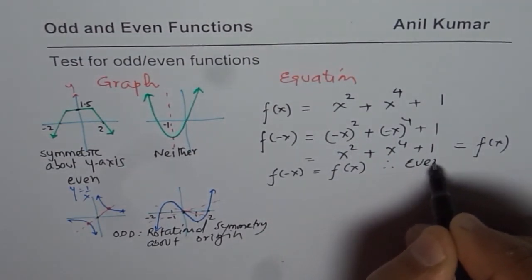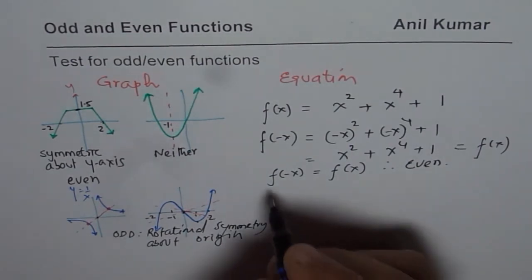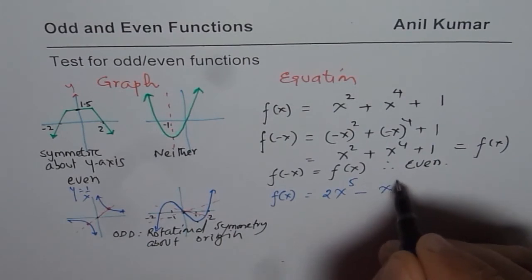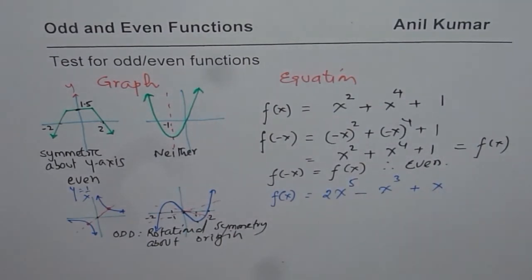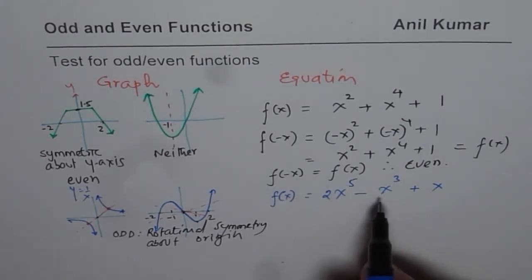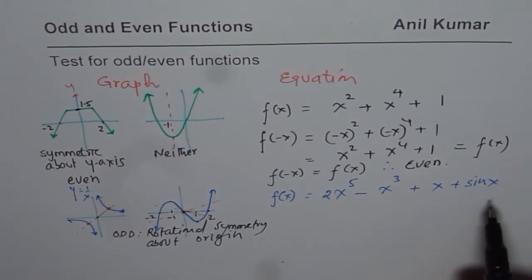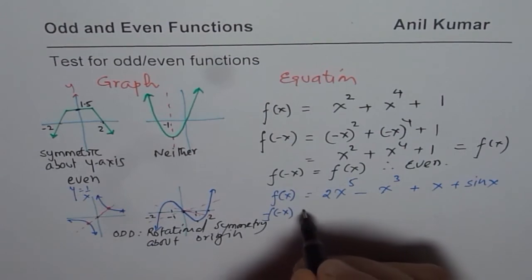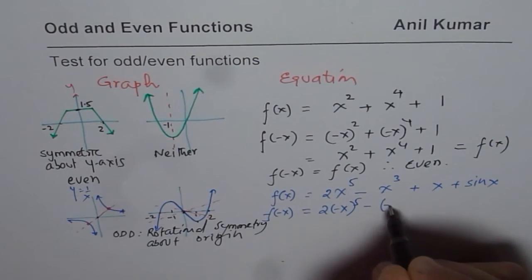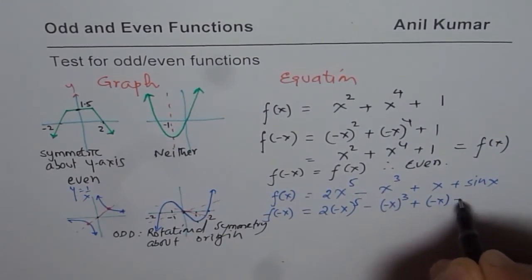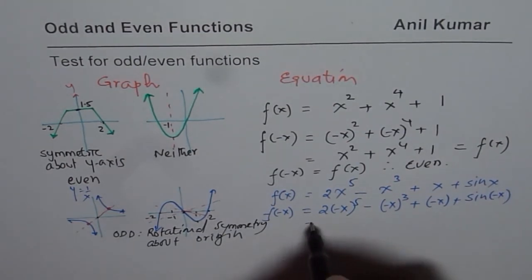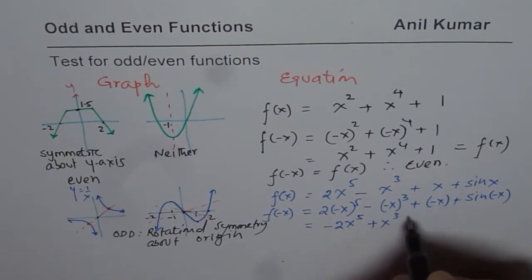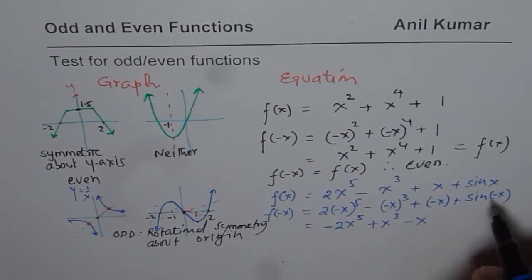Now let me give you an example of an odd function. Let's say f of x equals 2x to the power of 5 minus x cubed plus x plus sine x. All these terms are odd terms. To test it, find f of minus x by replacing x with minus x and simplifying. Odd powers make the terms negative, so you get minus 2x to the power of 5, and sine of minus x is minus sine x.